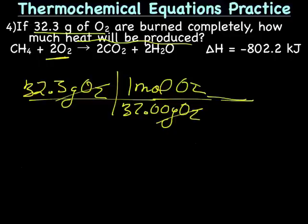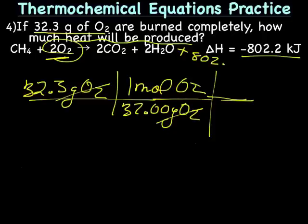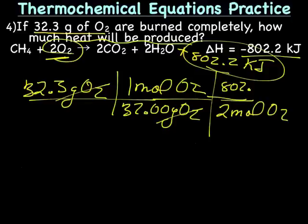Now that we've got to mole O2, we can use the mole energy ratio from the balanced equation. Two mole O2 equals 802.2 kilojoules. So two mole O2 goes on the bottom, and on the top we'll have 802.2 kilojoules. Now all we have to do is multiply and divide.